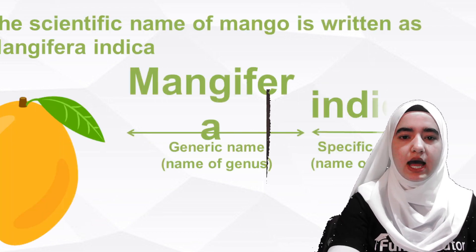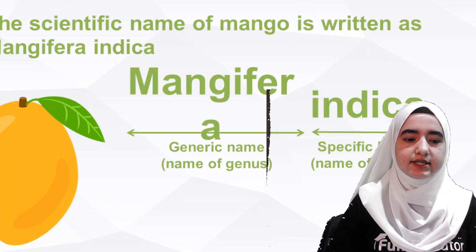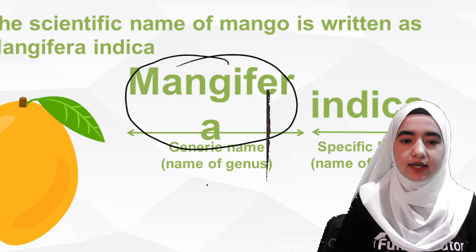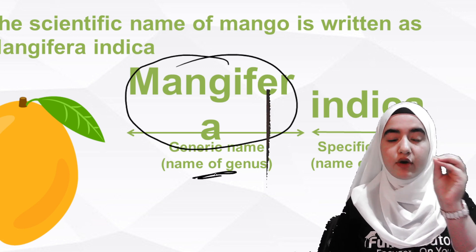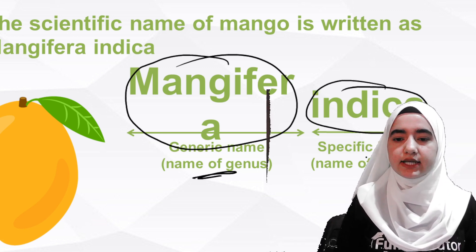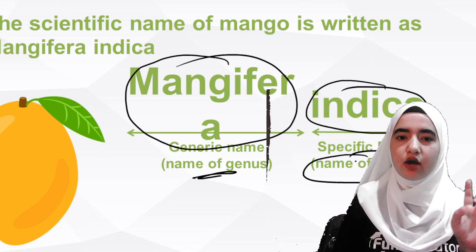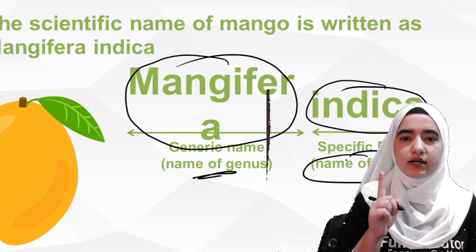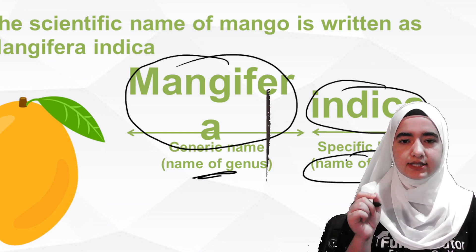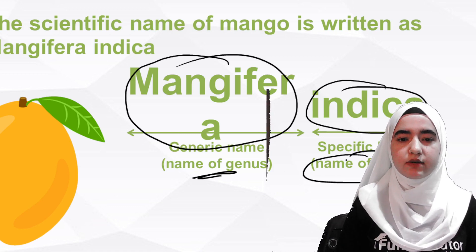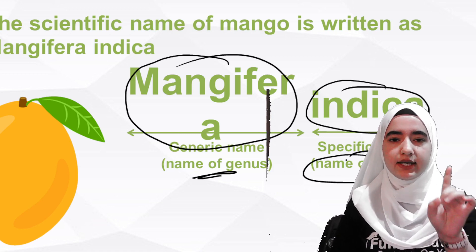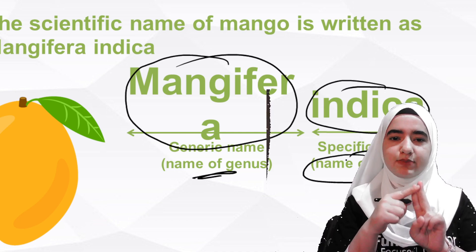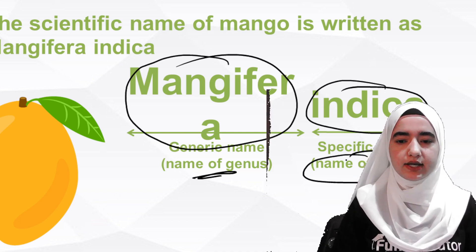Now look at binomial nomenclature. The scientific name of mango is written as Mangifera indica. Mangifera is the generic name — that is the genus. Indica is the name of the species. In binomial nomenclature, the first term is the generic name (genus) and the second term is the species, or specific epithet.